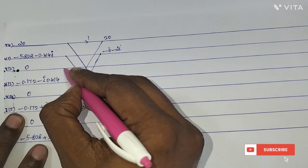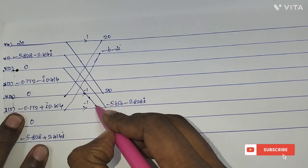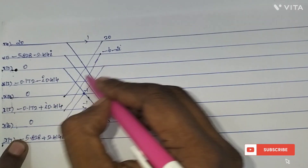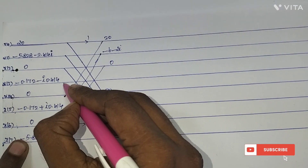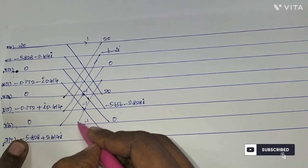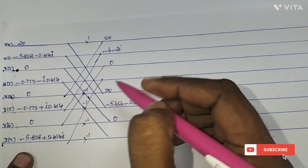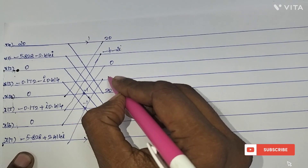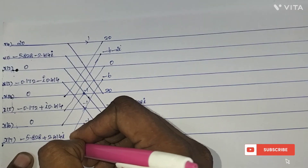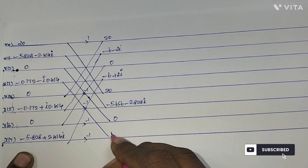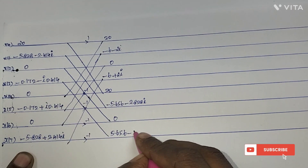For x(2) and x(6): addition gives 0 plus 0 = 0, subtraction gives 0 minus 0 = 0. For x(3) and x(7): addition gives minus 0.172 minus 5.828 = minus 6, minus 0.414 plus 2.414 = plus 2i; subtraction gives 0.172 plus 5.828 = 5.656, minus 0.414 minus 2.414 = minus 2.828i.